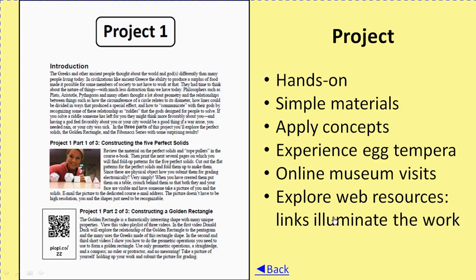The projects are intended to be fun — they have you doing things with your hands. For example, the first has you pull out sheets from the workbook and fold them into perfect solid shapes. The next uses a straight edge and compass to construct a golden rectangle, which is an important element of artistic and architectural design from ancient Greece onward. You construct one on a sheet of paper, take a picture of it, and send me a picture of you holding that item — that picture becomes your submission.